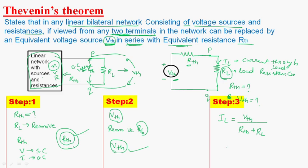This is about Thevenin's theorem. In the first step, we find RTH. In the second step, we find VTH. And finally, we find the current flowing through the load. Thank you.